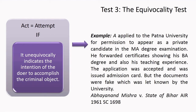The third test to determine whether the act is an attempt or preparation is the Equivocality Test. The test says the act is an attempt if it unequivocally indicates the intention of the doer to accomplish the criminal object. This means the acts done or the steps taken by the doer clearly suggest his intent to translate his criminal purpose into the substantive offence. We look at his acts and steps — does it unequivocally indicate his intention to accomplish the criminal object? If yes, then it is attempt and not preparation.